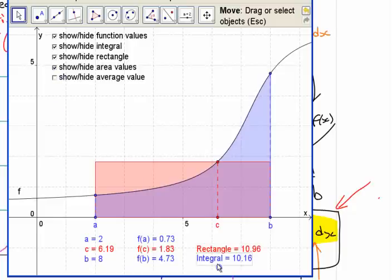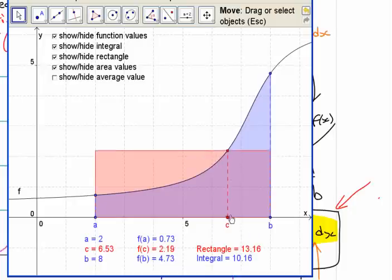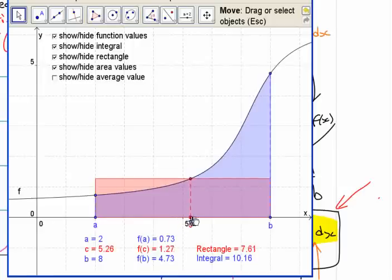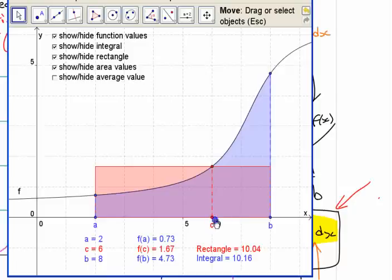It shows the values down here. Up here, obviously the rectangle is a lot more than the integral. Down here, the area is a lot less. But somewhere in here is this average value where that red is the same thing. It doesn't matter that much. 10.2 is probably as good as we're going to get.